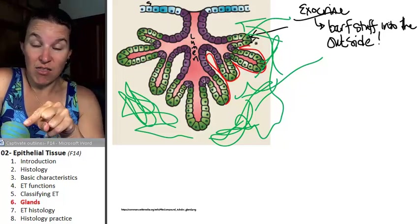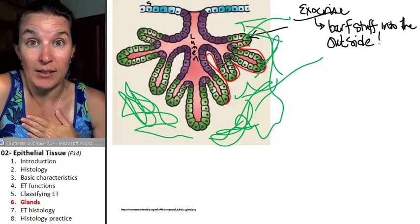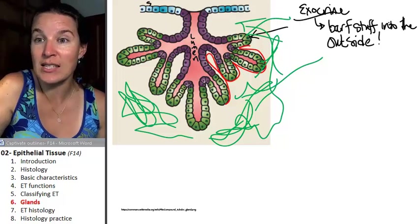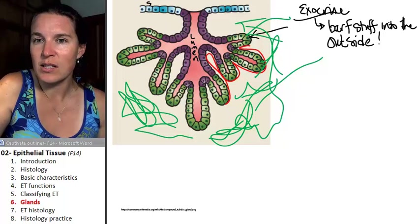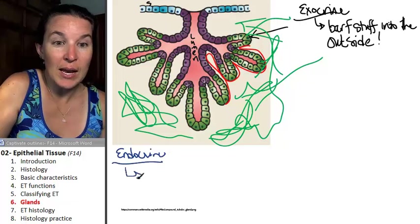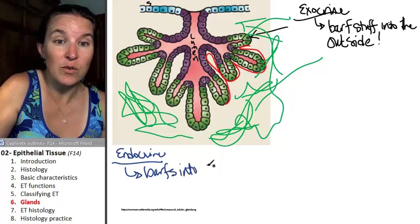If this thing was barfing substance into your body, into your blood, that's actually where it has to go. Then it's going to be an endocrine gland. So let's do an endocrine. An endocrine gland barfs stuff into the blood.